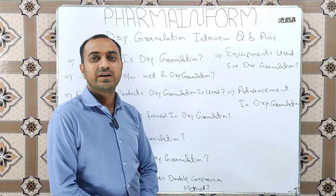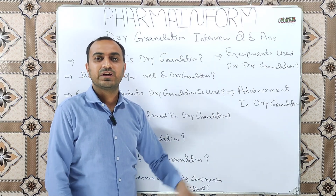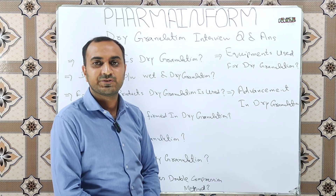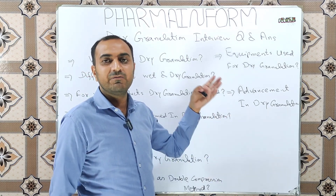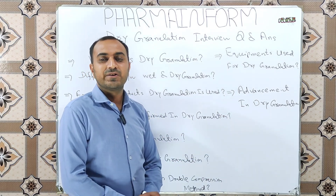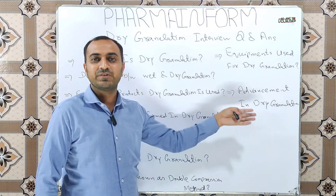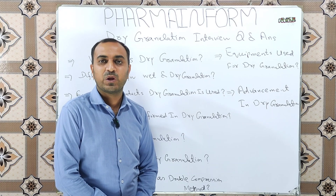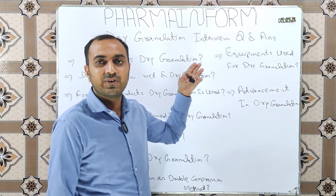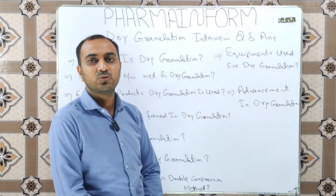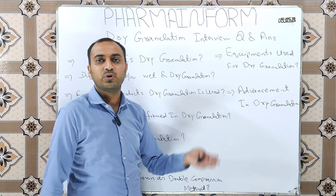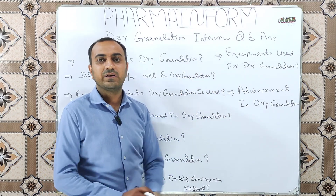The next question is: what are the advancements in dry granulation? The advancement is the application of a pneumatic system. When using a roller compaction system, a pneumatic system is applied to collect all fine powder, which is then compressed again into powder sheets to improve granule quality and reduce the ratio of fines.